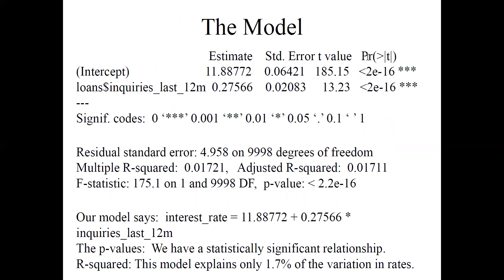Here's all the output. Under the estimate column, we've got an intercept of 11.51 and a slope of 0.047 multiplied by inquiries_last_12m. Both P values are very, very small, so we have statistically significant relationships here.